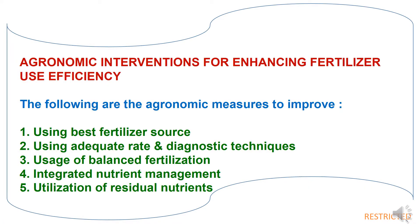Now we will study agronomic interventions for enhancing fertilizer use efficiency. There are different agronomic measures: first, using the best fertilizer source; second, using adequate rate and diagnostic techniques; third, usage of balanced fertilization; fourth, integrated nutrient management; and fifth, utilization of residual nutrients. We will now discuss each measure in detail.